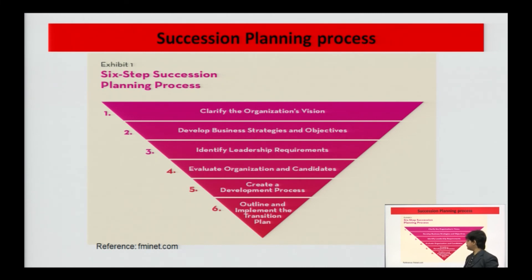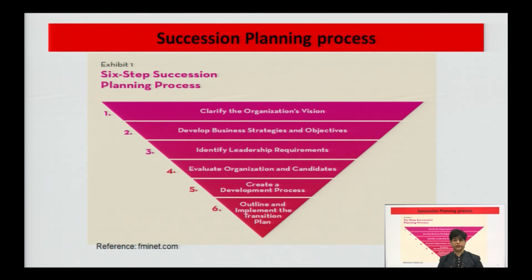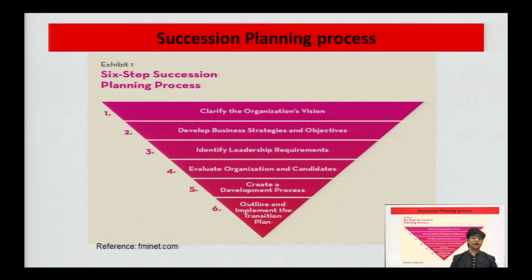Career growth can only be visualized if the employee is clear whether they have the potential to be in that leadership position. Next comes creating a development process. Once potential employees have been identified, the task is training them to take up the leadership position. This training and development happens as a two-way process — there should be mentoring, counselling, and a lot of training to enhance the skills of the individual for the leadership position. The entire transition should then happen in a smooth and efficient manner.